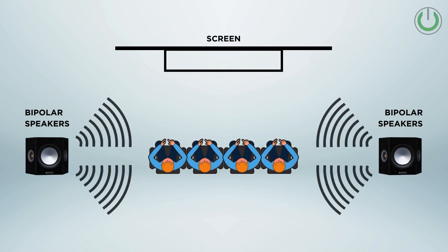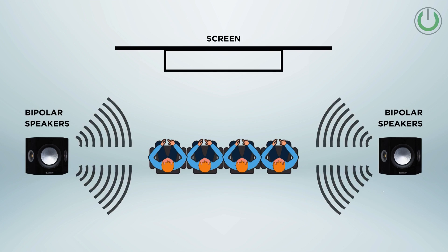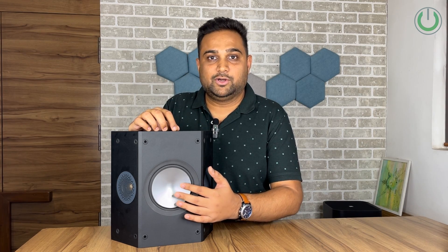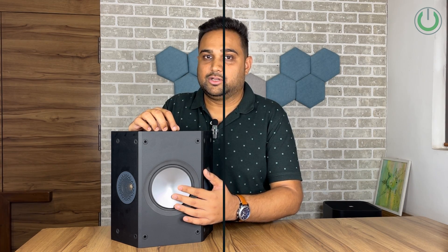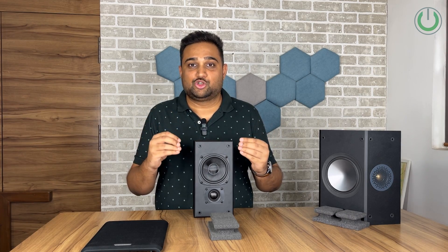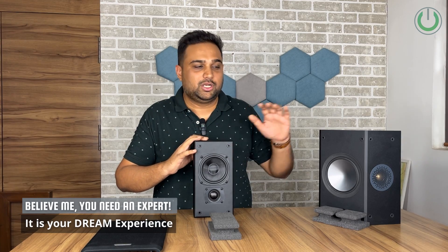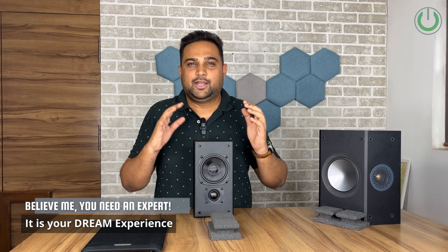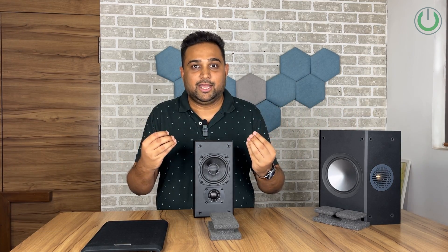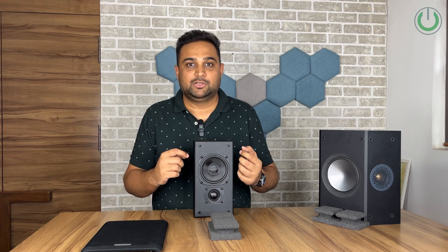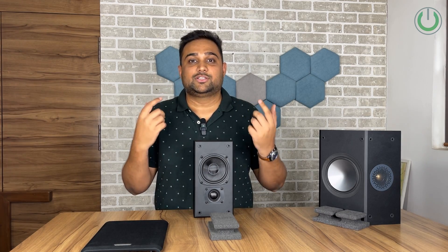In a bipolar or dipolar speaker, you have two tweeters throwing off-axis sound apart from the sound coming from the mid-range driver or woofer. Now that we have established that dipolar speakers are not supposed to be used in a Dolby Atmos configuration, it leaves us with only two options: unipolar and bipolar. Let us try to understand more practically which one would be the best option for your surround sound setup.